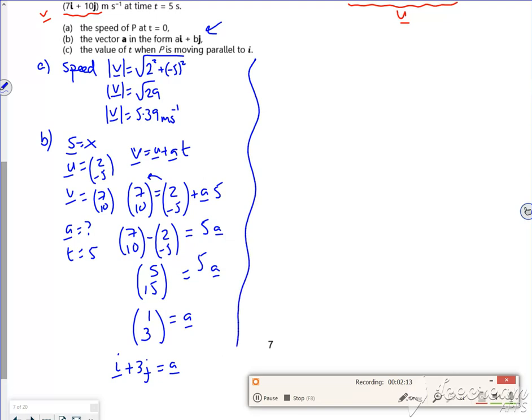Let's have a look at c. So c says, the value of t when p is moving parallel to i. Now when it talks about moving, we need the velocity, because having its displacement just tells you where it is.